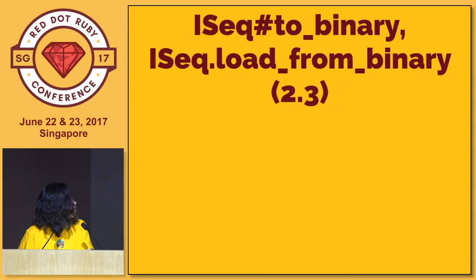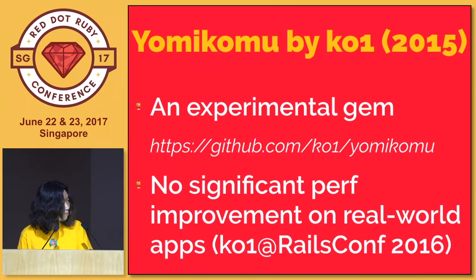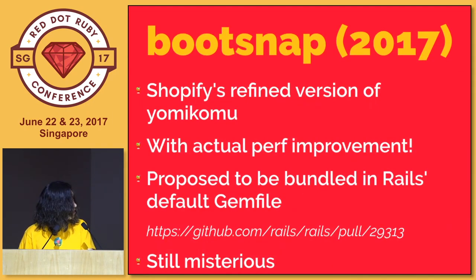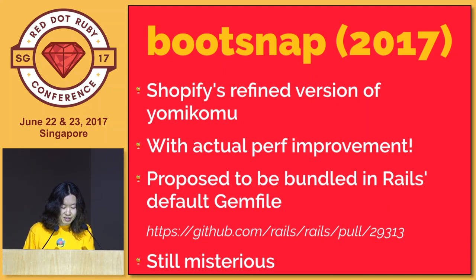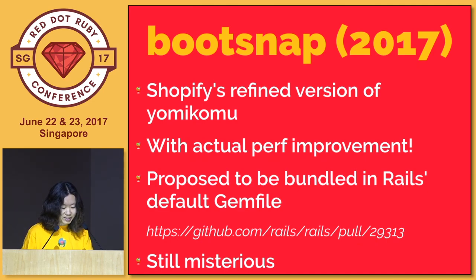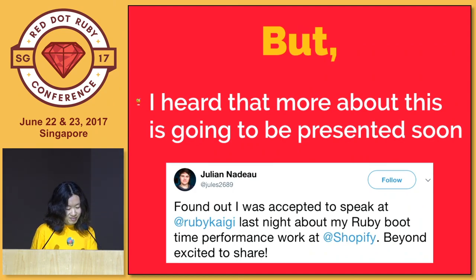Anyway, require_relative is basically a good thing, so I recommend you to use it instead of require. Here's another topic: instruction sequence load and dump. These are public APIs since Ruby 2.2. Koichi created something using this, but his version doesn't really make Rails faster. But this year Shopify created something resembling Koichi's work, and they say it's making Rails boot time faster. I heard one of the creators of this plugin is coming to RubyKaigi.